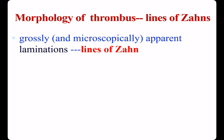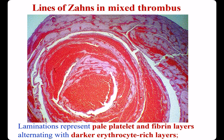Morphology of thrombus. Thrombus can have apparent lamination called lines of Zahn. This is a mixed thrombus with lamination structure. The pale areas, alternating with red areas — in the pale areas there are platelets and fibrin, while in the red areas there are erythrocytes.